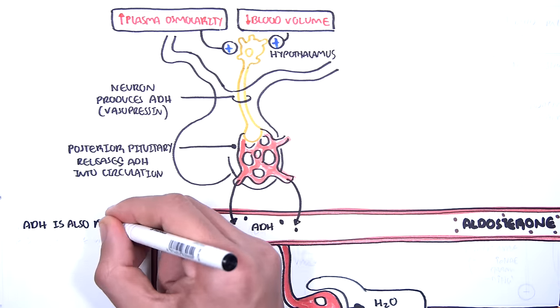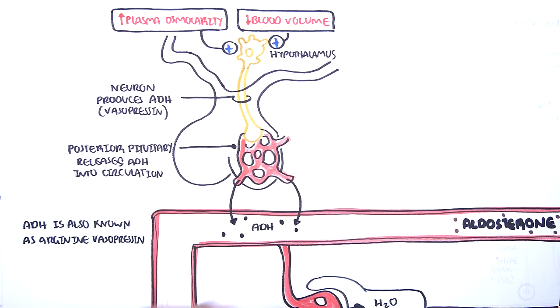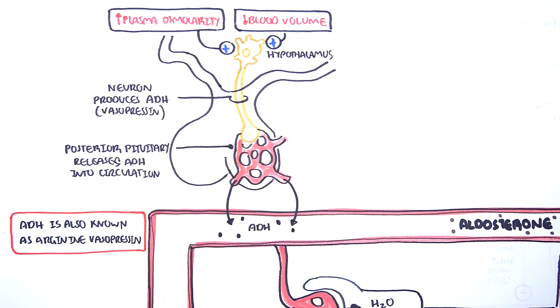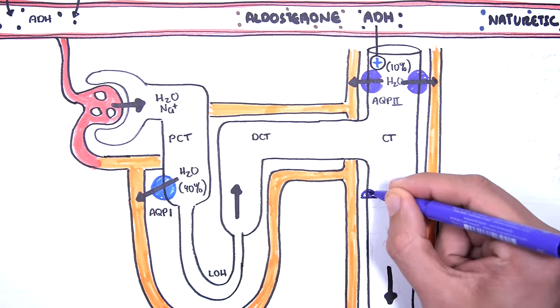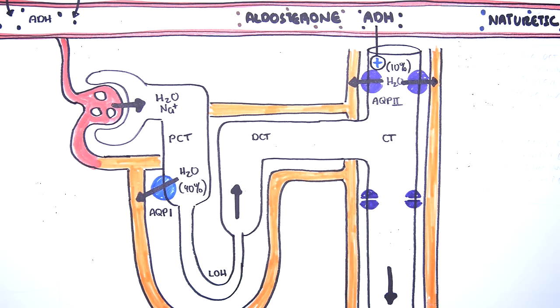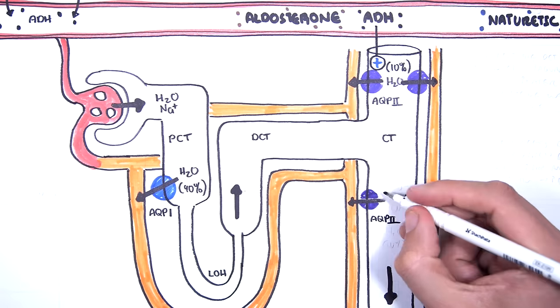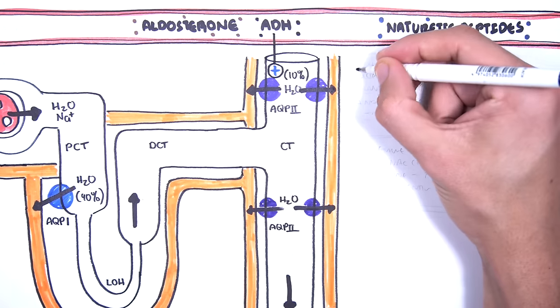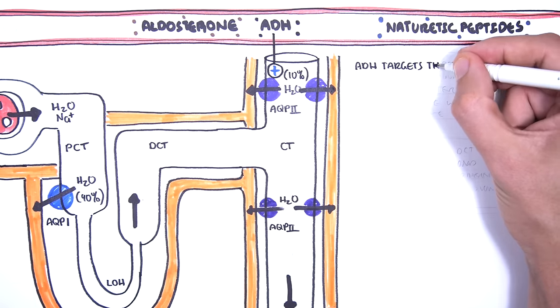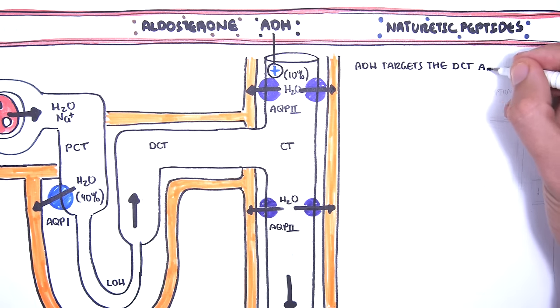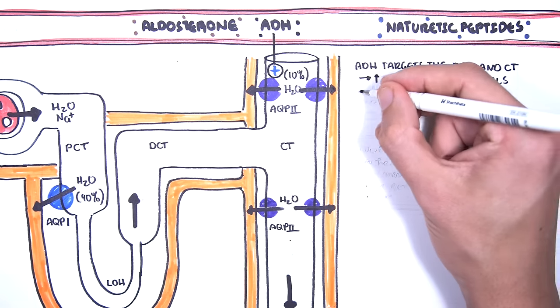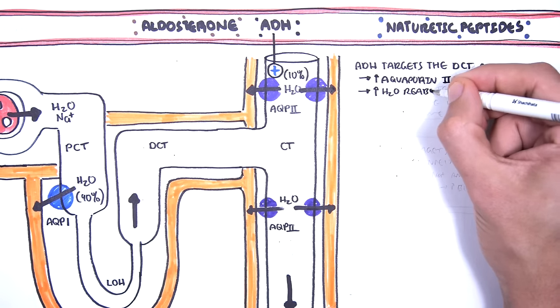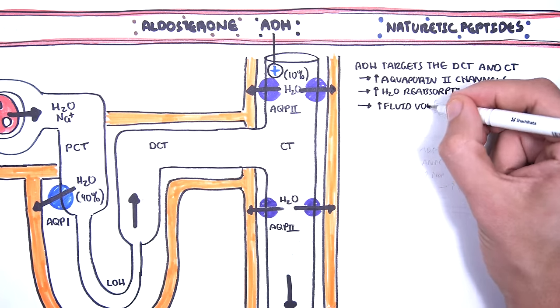ADH is also known as arginine vasopressin. ADH travels to the nephron, to the distal convoluted tubules and the collecting duct, where it will stimulate the expression of aquaporin type 2 channels to reabsorb more water back into circulation. In summary, ADH targets the distal convoluted tubules and the collecting ducts of the nephron. It increases aquaporin type 2 channels, which increases water reabsorption and so increases fluid volume and also decreases plasma osmolarity.